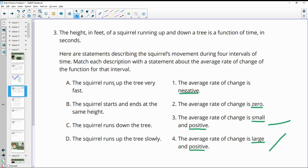So A, the squirrel runs up the tree very quickly. So up the tree and fast. So that's going to be this large positive rate of change. They're going to be getting up quickly, so large positive. The squirrel starts and ends at the same height. So if they start and then they go around and then they end at the same height, that's going to have an average rate of change of zero. The squirrel runs down is going to be the negative rate of change, number one. And then the squirrel runs up the tree but slowly will be that small positive in number three.